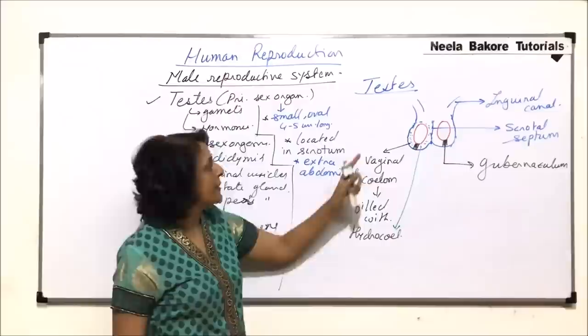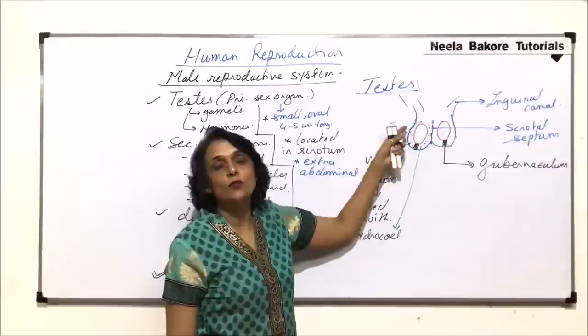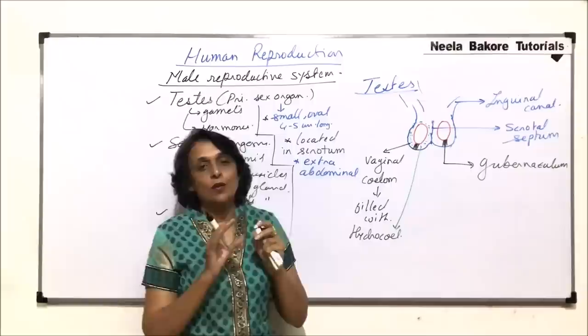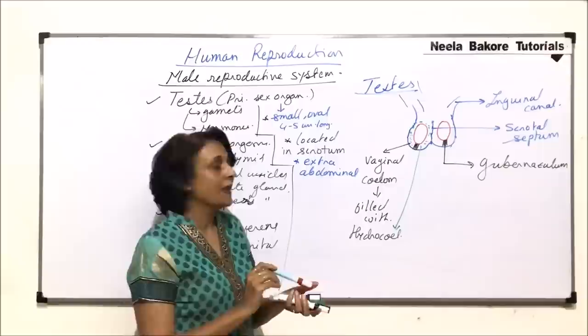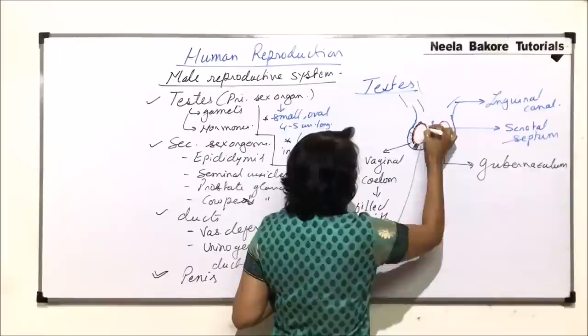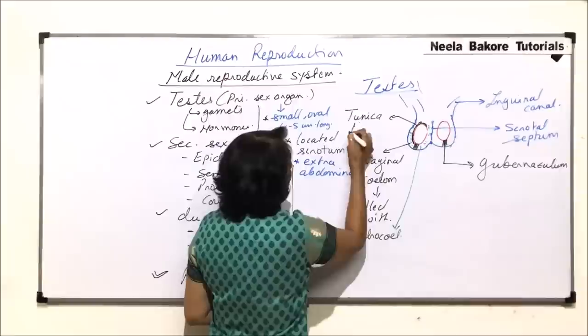There is one more structure that helps fix the testis called the spermatic cord. The spermatic cord is a thick cord-like structure through which arteries come in, veins leave, and vas deferens also leaves. Both the gubernaculum and the spermatic cord keep the testis in position. Each testis is surrounded by a thick fibrous layer known as tunica albuginea.